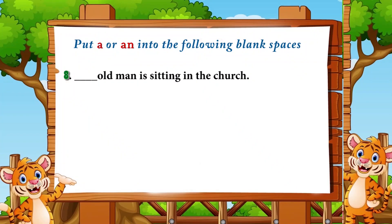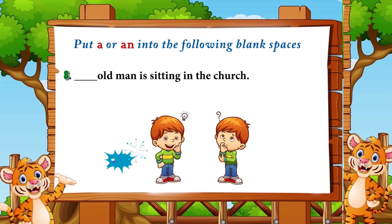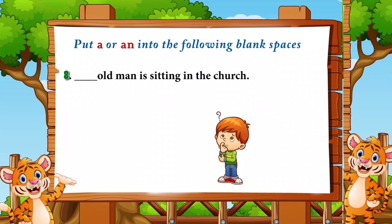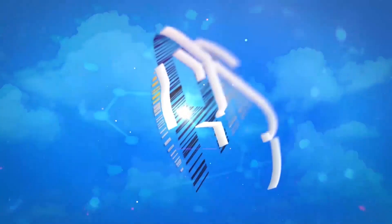Number eight: '___ old man is sitting in the church.' The answer is 'an' — 'an old man is sitting in the church' — because 'old' begins with the vowel sound 'o.' Well done, students — have you answered all the questions? Very good!